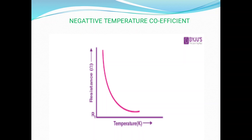The term negative temperature coefficient means that in the case of a semiconductor, as temperature increases, resistivity decreases. To explain this, consider a graph where the x-axis is temperature and the y-axis is resistance. As temperature increases, resistivity decreases — one increases while the other decreases. That is why resistance is said to be inversely proportional to temperature. This is technically called negative temperature coefficient.